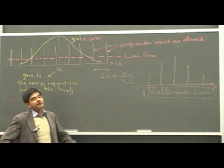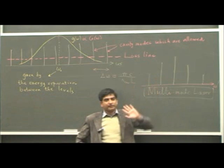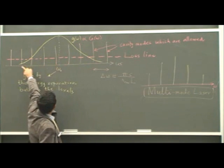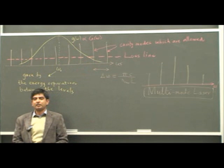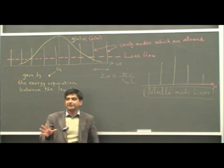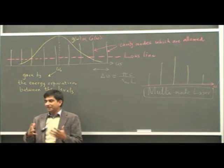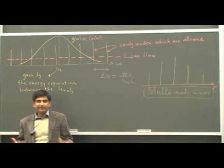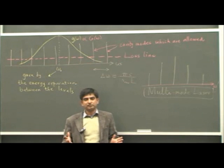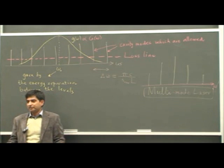Most lasers that operate — the cheaper or more economical ones — are multi-mode lasers; they comprise multiple frequencies. The spectral width of this laser is effectively the same as the gain bandwidth. So this is quasi-monochromatic. You can never make a laser with just one frequency, so all lasers are quasi-monochromatic — good approximations to monochromatic light, but not truly monochromatic.